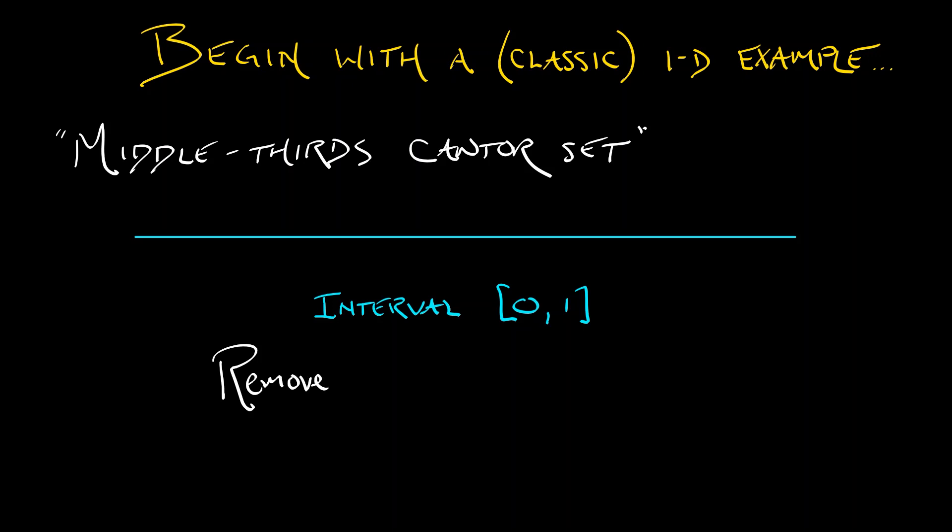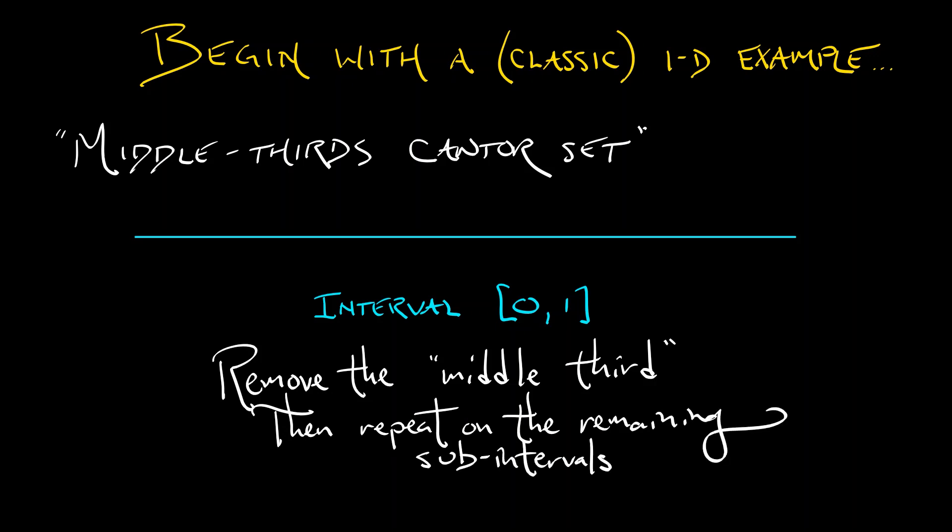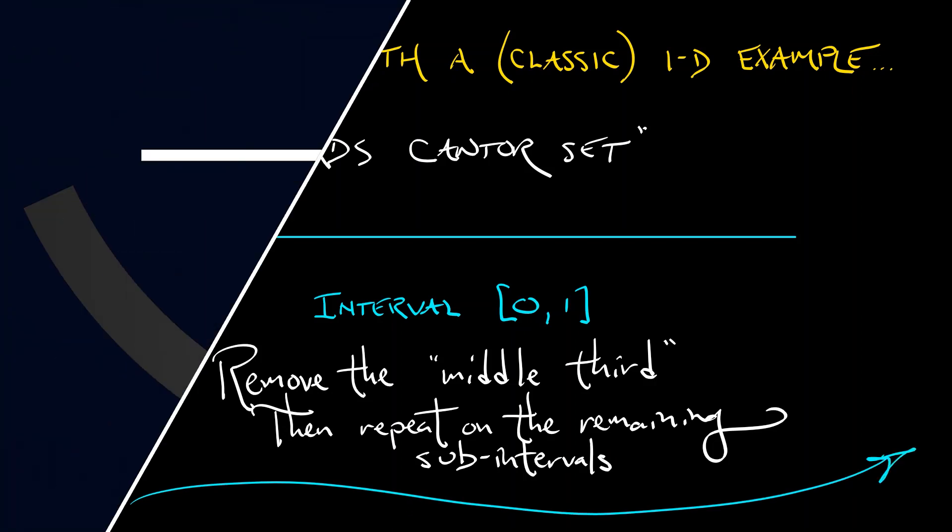What we do is we remove the middle third of that interval. I remove the open subset between one-third and two-thirds. What I have left over is a pair of closed intervals. What I'm going to do next is do this process recursively. Remove the middle third from each of those two intervals, and then remove the middle thirds from each of the remaining intervals. I keep going forever.